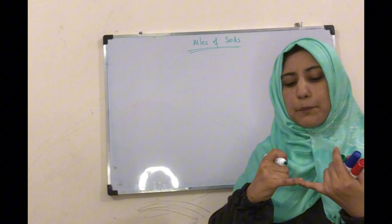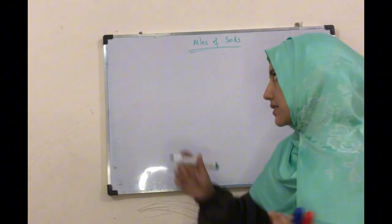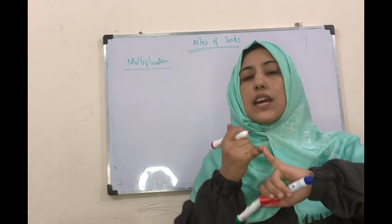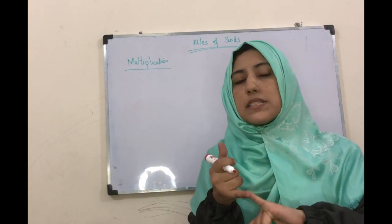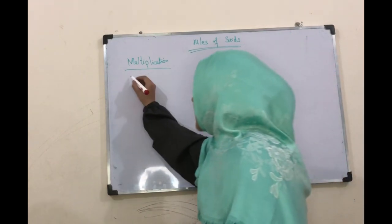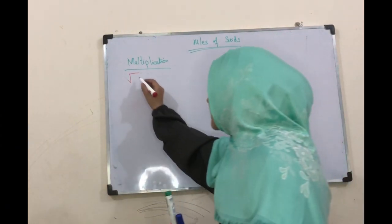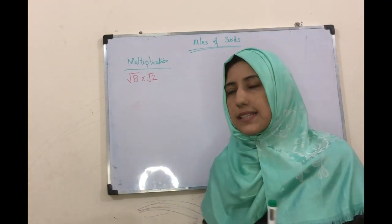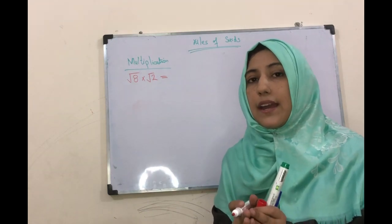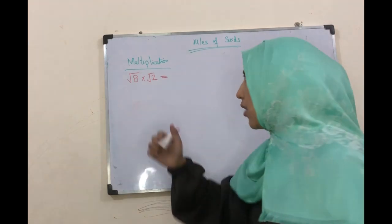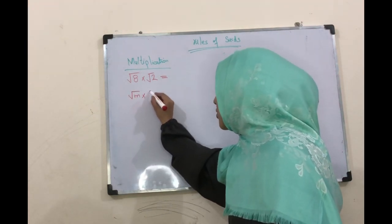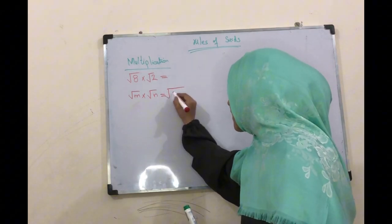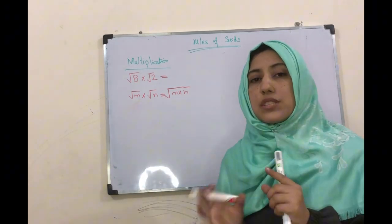پہلا rule آتا ہے multiplication and division of two surds. Multiplication میں کیا ہوتا ہے - جب ہمارے پاس دو surds given ہوتے ہیں، اور آپ کو پتہ ہے surds کیا ہوتے ہیں - irrational numbers ہوتے ہیں۔ تو جب دو irrational numbers in the form of surds ہوں گے تو ہم اس کو کیسے multiply کریں گے؟ For example, we have two numbers √8 and √2. اگر ہمارے پاس کوئی سے بھی دو numbers ہیں، let's suppose m and n، تو √m × √n = √(mn). These two statements are equal.